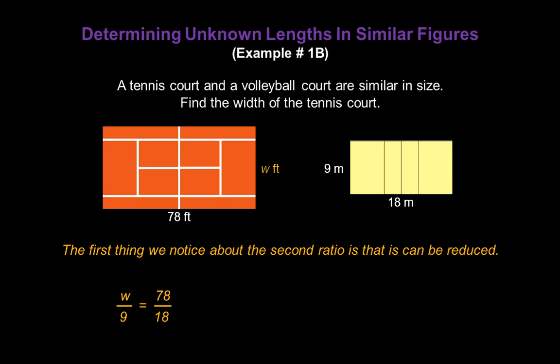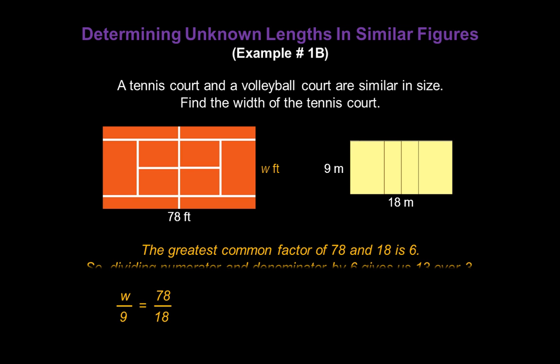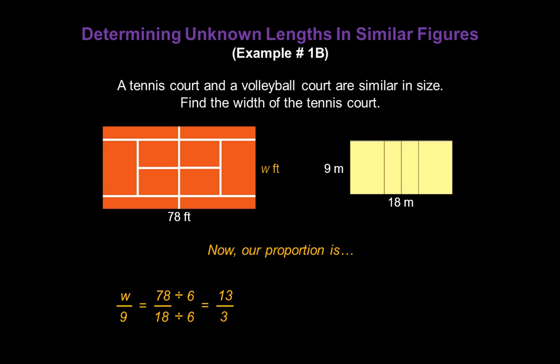And the first thing we notice about the second ratio, 78 over 18, is that it can be reduced. Now we don't have to reduce it, but it can make the problem easier to solve if we do so. The greatest common factor of 78 and 18 is 6. So dividing numerator and denominator by 6 is going to give us a reduced fraction of 13 over 3. Now our proportion will be W over 9 equals 13 over 3. That will certainly be easier to solve.